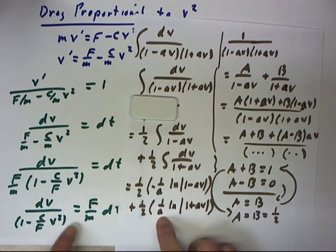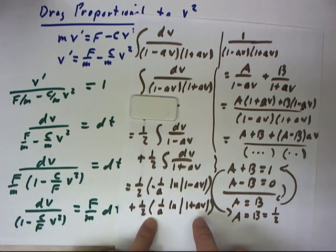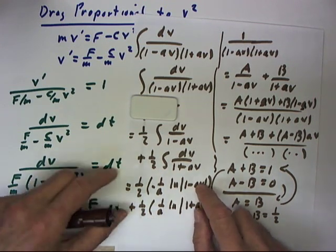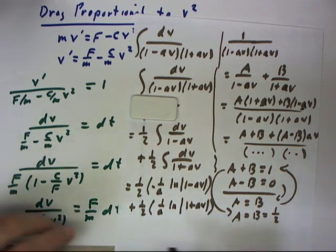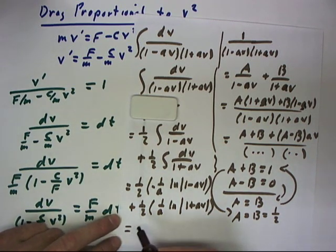Now, we're going to correlate this. This a is going to turn out to be the square root of c over f and I'm going to be able to plug that in here, get this integral. Also note that this is going to equal, well, let's go ahead and do one last step here.